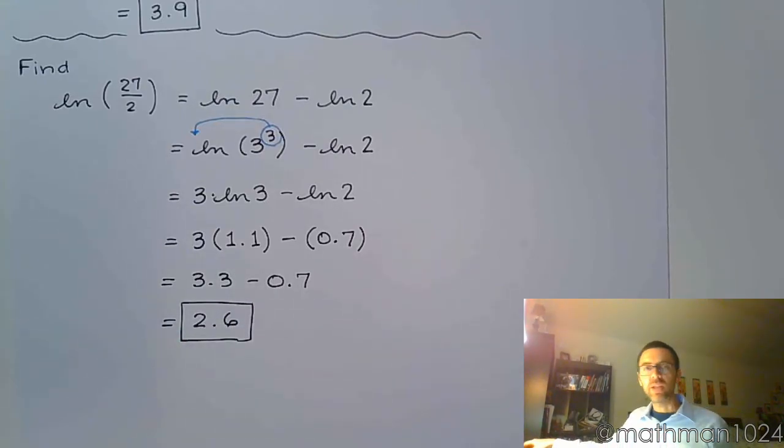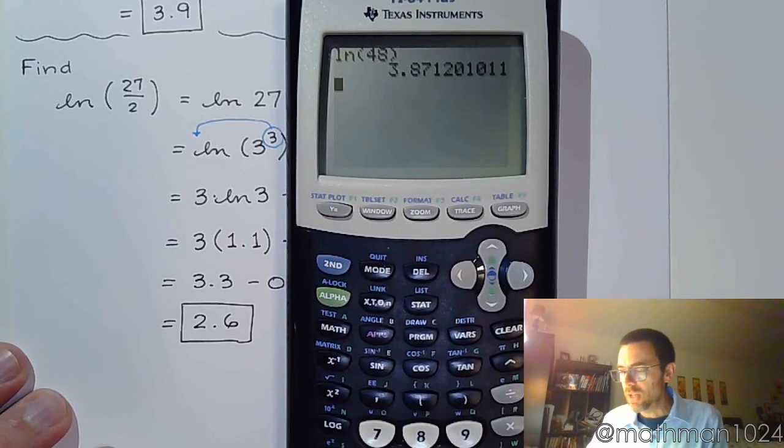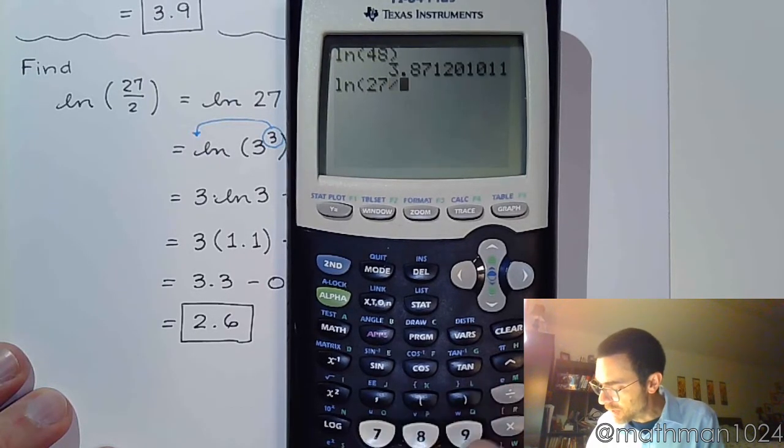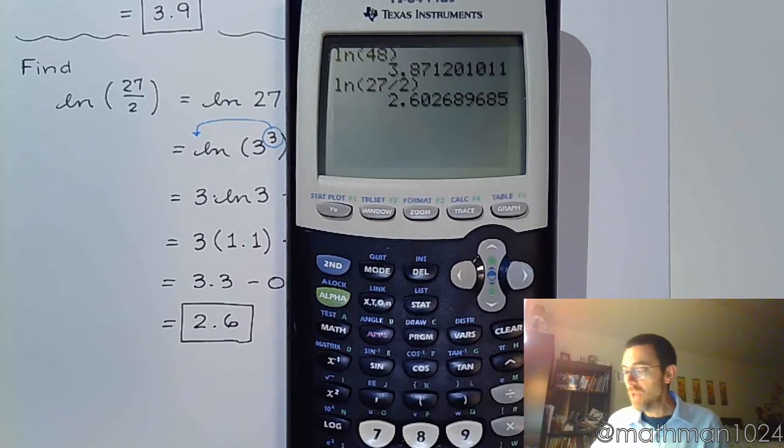But let's check that in the calculator to see is our estimate close to what the calculator says it is. Now the calculator can never give you an exact value because natural log of 27 over 2 is never going to be exact. So let's see, natural log of 27 divided by 2, 2.60 and some other stuff. So yeah, our approximation is really close.